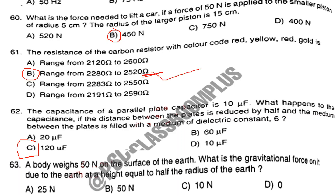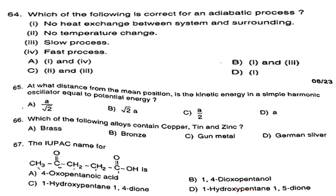Question number 64. Which of the following is correct for an adiabatic process? Options: first, no heat exchange between system and surrounding; second, no temperature change; third, slow process; fourth, fast process. The answer is Option A — the correct statements are the first one (no heat exchange between system and surrounding) and the fourth one (fast process).